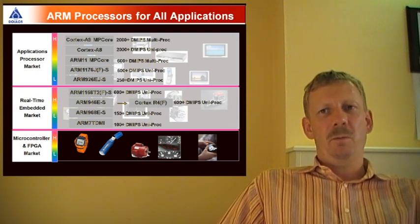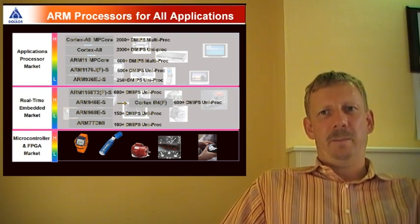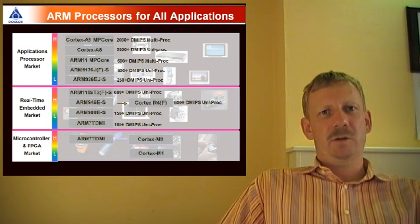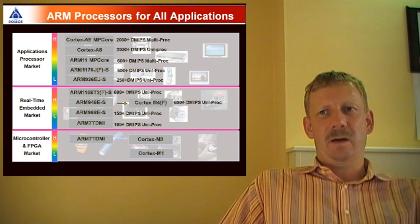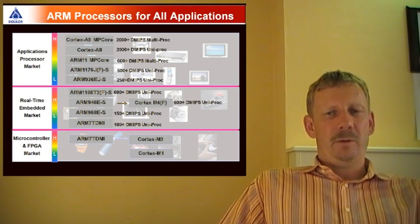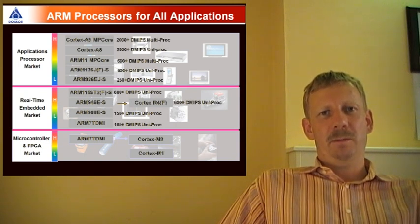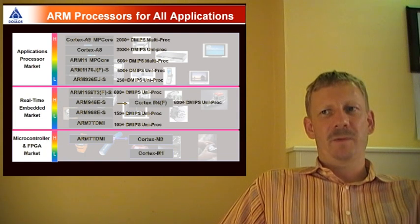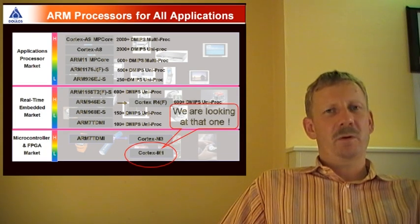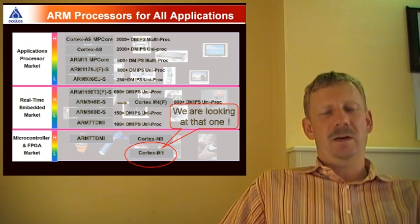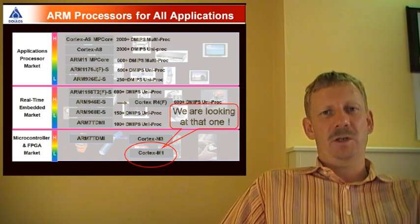The application area we want to talk about today is the M architecture. The Cortex-M architecture family is designed for the microcontroller market. In this area, ARM has developed a processor especially designed for FPGAs. The Cortex-M1 is the first processor from ARM explicitly designed for the FPGA market.